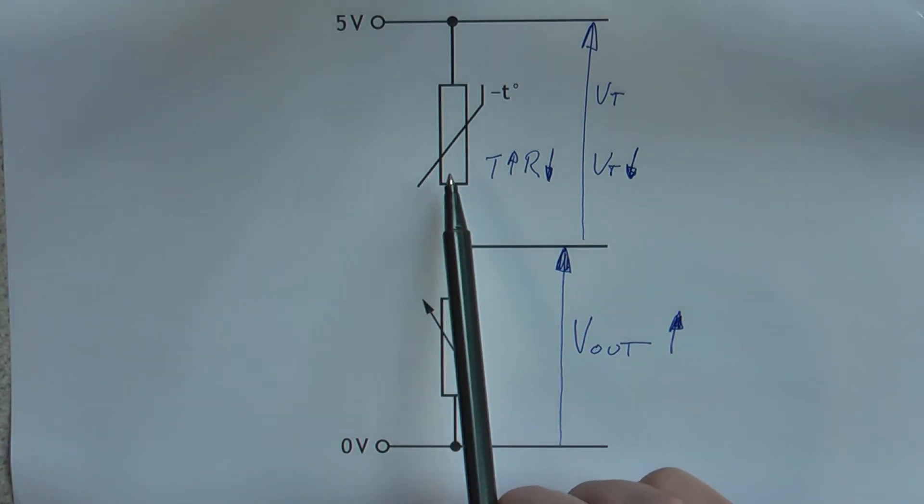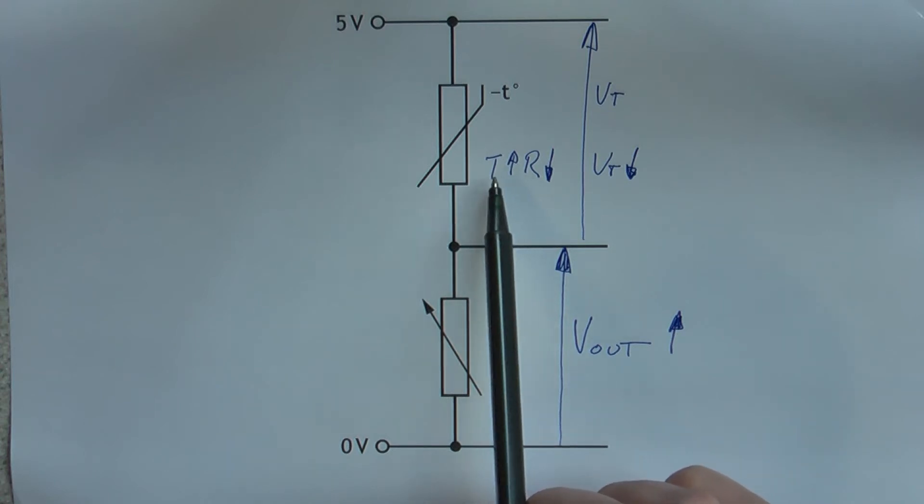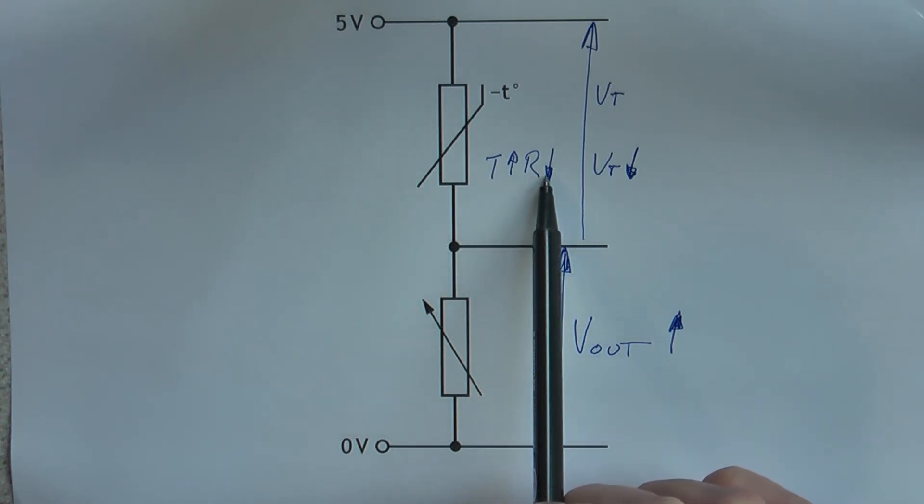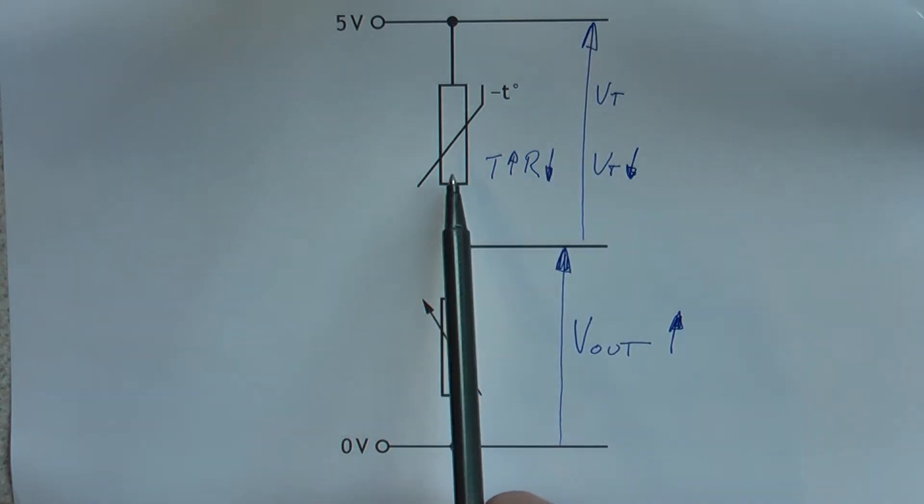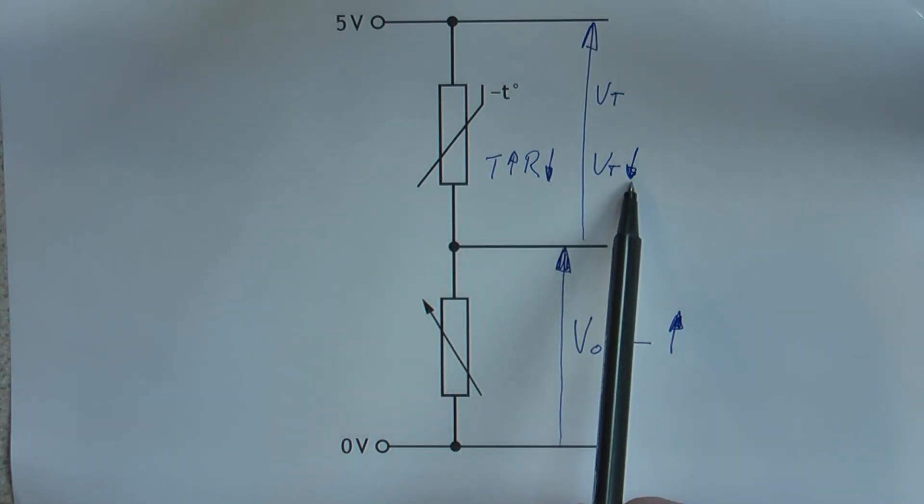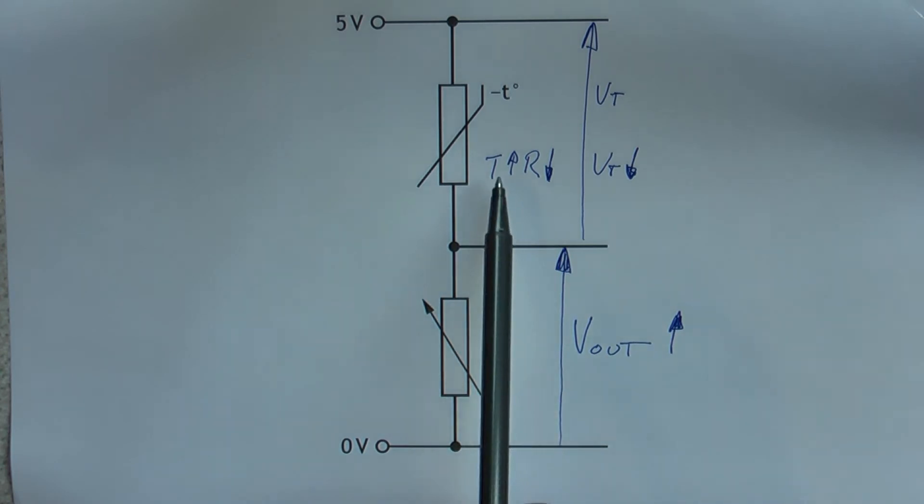As it gets hotter, as the temperature goes up, the resistance will go down. Now the voltage Vt, which is across that resistance, it goes down as well. So as Vt goes down, V_out goes up. So in the hot, V_out is big.